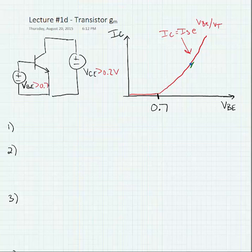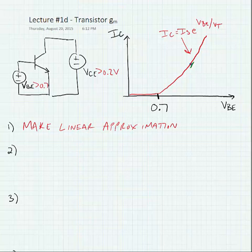So we're going to make our linear approximation. We're assuming that the signal swings around that bias point are very small and linear. Our DC bias point might be in volts and our signal swing will be certainly less than volts, most likely in the millivolt range or smaller.